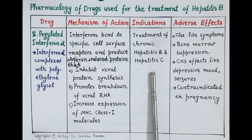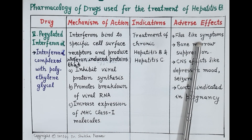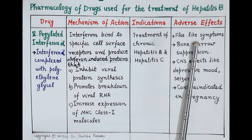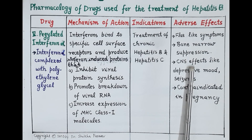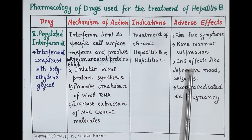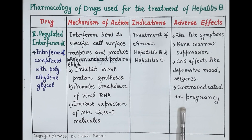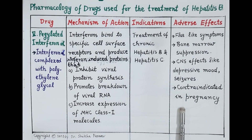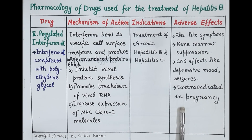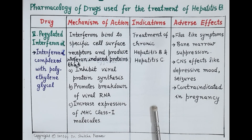Interferon alpha is administered parenterally and is used in the treatment of chronic hepatitis B and C. Adverse effects include flu-like symptoms, bone marrow suppression, and central nervous system effects such as depressive mood and seizures. It is contraindicated in pregnancy as it produces a teratogenic effect.